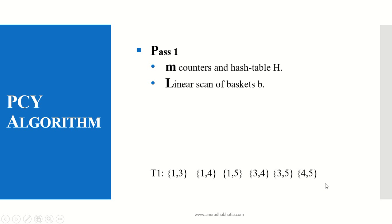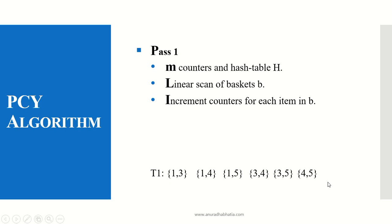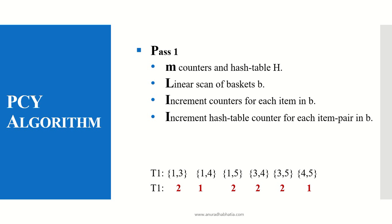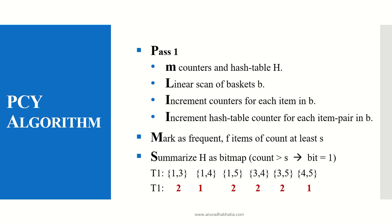We scan the baskets and find out how many increment counters exist for each item. That is, how many times item sets like 1,3 / 1,4 / 1,5 / 3,4 / 3,5 / 4,5 appear — these pairs are checked for existence. The counters show 2, 1, 2, 2, 2, 1 as the number of times increments happen. We increment the hash table counter for each pair in the basket, mark them as frequent item sets, and count with the support system, removing those below minimum support.